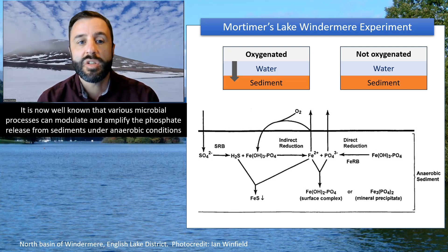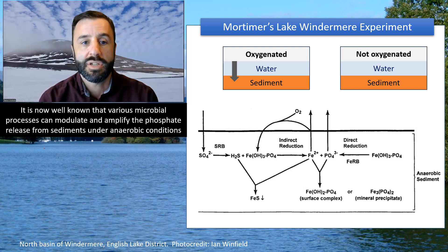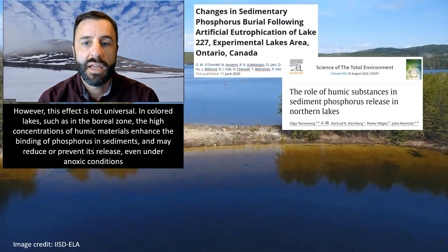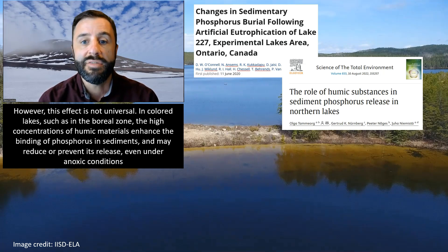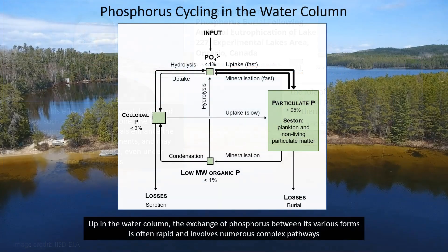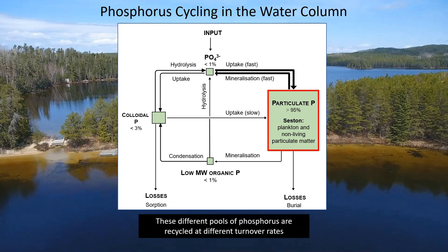It is now well known that various microbial processes can modulate and amplify the phosphate release from sediments under anaerobic conditions. However, this effect is not universal. In coloured lakes, such as in the boreal zone, the high concentrations of humic materials enhance the binding of phosphorus in sediments and could prevent its release even under anoxic conditions. Up in the water column, the exchange of phosphorus between its various forms is often rapid and involves numerous complex pathways. A large portion, often more than 95%, is bound in the particulate phase of living biota, especially bacteria, algae, and other microbes, as well as with non-living particles. These different pools of phosphorus are recycled at different turnover rates.